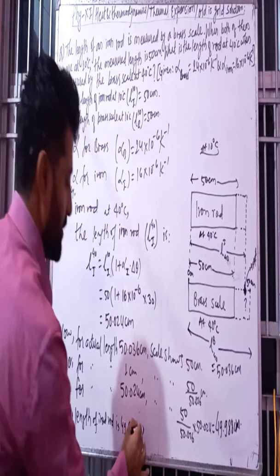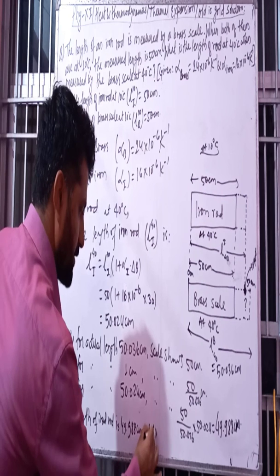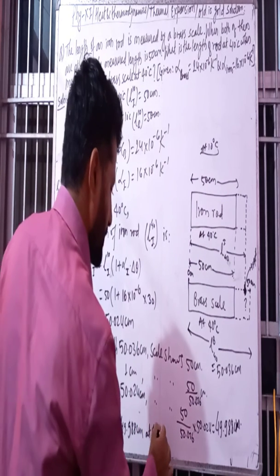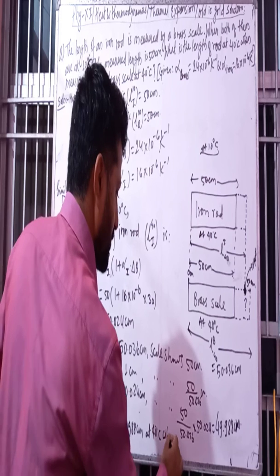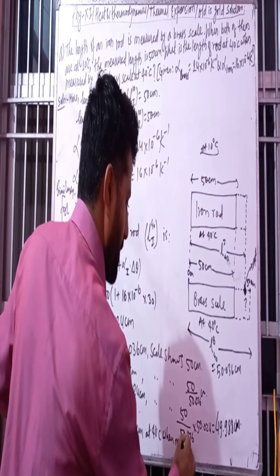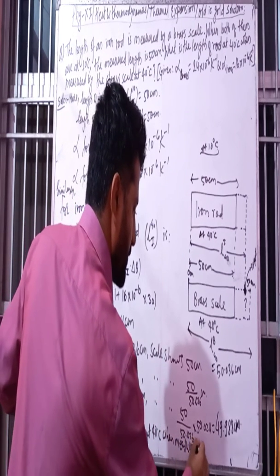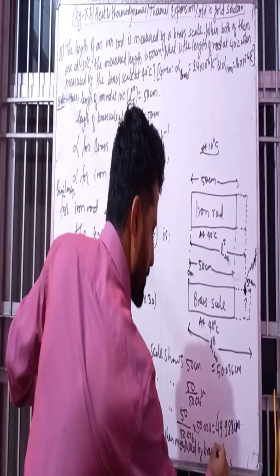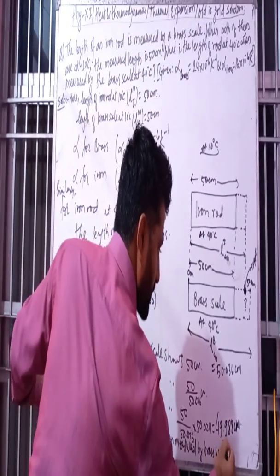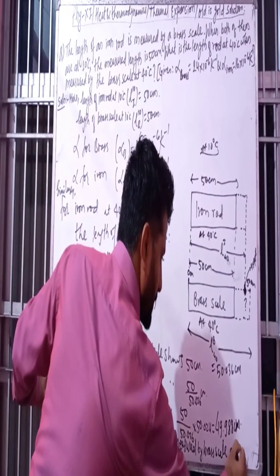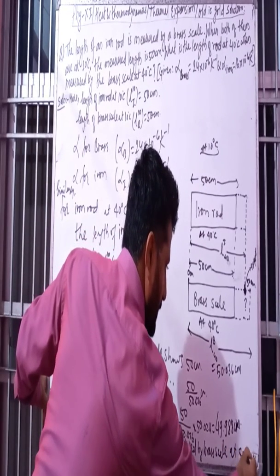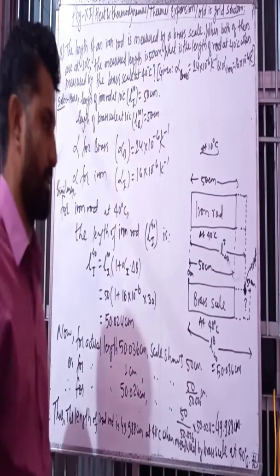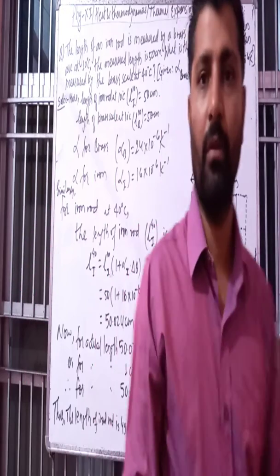The iron rod is measured at 40 degrees centigrade by the brass scale. The iron rod is measured by the brass scale at 40 degrees centigrade. The result is clear.